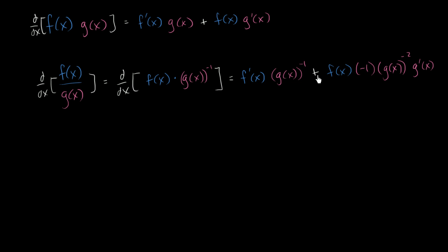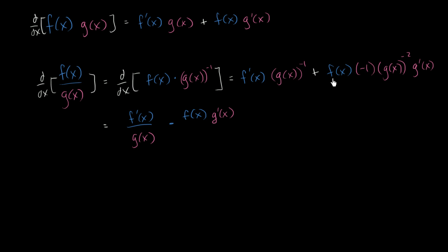Now this is not the form you might see when people discuss the quotient rule in your math book, so let's simplify. All of this is going to equal: we can write the first term as f prime of x over g of x, and we can write the second term with the negative sign out front as negative f of x times g prime of x, all over g of x squared.